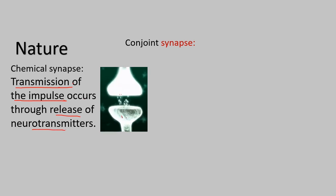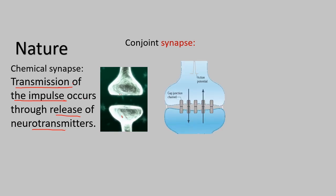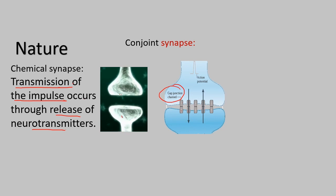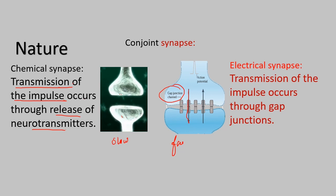Transmission of impulse occurs through the release of neurotransmitter — this is the chemical synapse. The electrical synapse is called a gap junction. It is very fast. The action potential is easier to generate. Transmission in electrical synapse occurs through the gap junction.